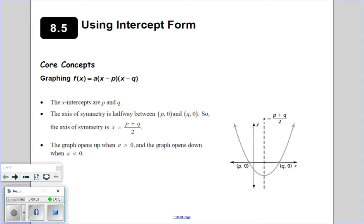This is Lesson 8.5 and we are going to explore the third and last equation for quadratics called intercept form. The good news is that it really goes back to everything we did in Chapter 5, because intercept form is just another word for factored form. If you look at what this equation looks like, notice that it's just the factored version of those standard form trinomials.